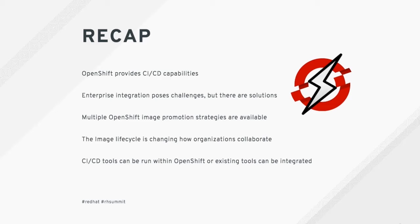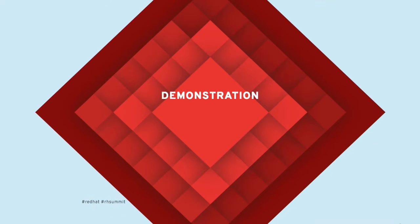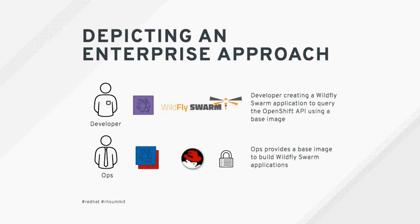In recap: OpenShift provides CI/CD capabilities and enables them in the enterprise. There are solutions for enterprise integration challenges, multiple image promotion strategies, the image lifecycle is changing how organizations collaborate, and various CI/CD tools can run within OpenShift or integrate with the platform. Now let's demonstrate how this works in practice — showing how enterprises can use their existing tooling while taking advantage of OpenShift's power.